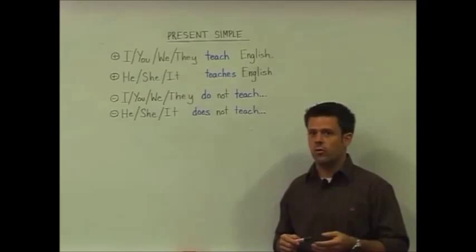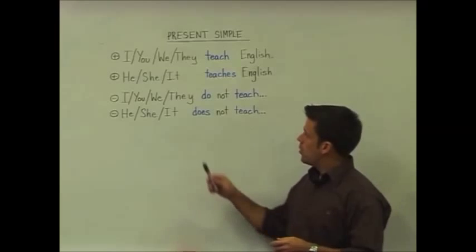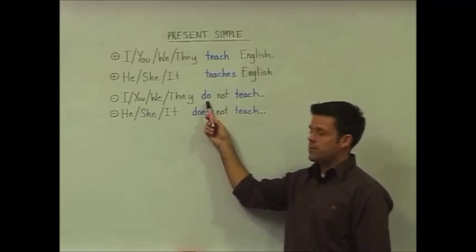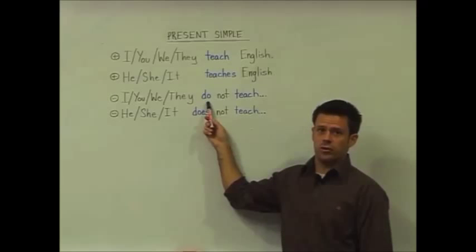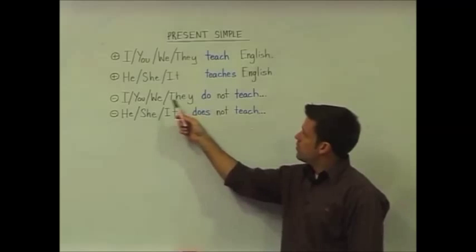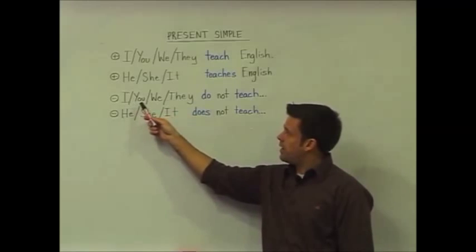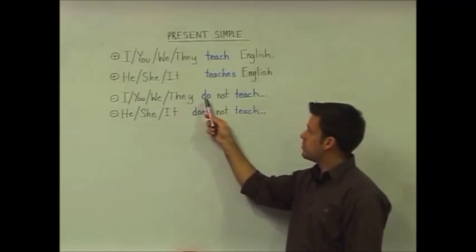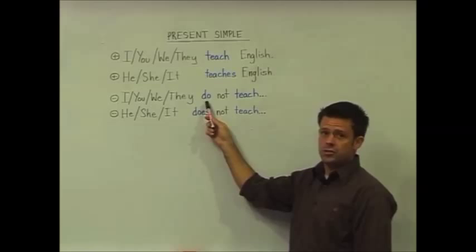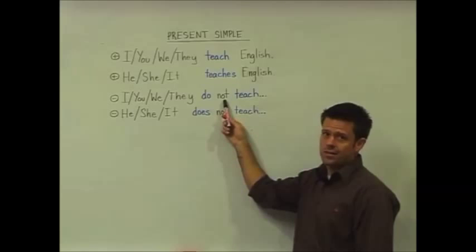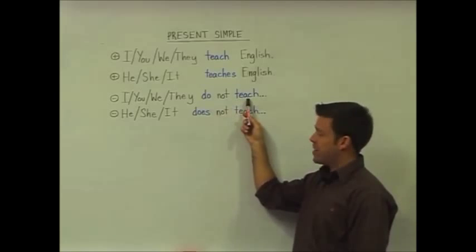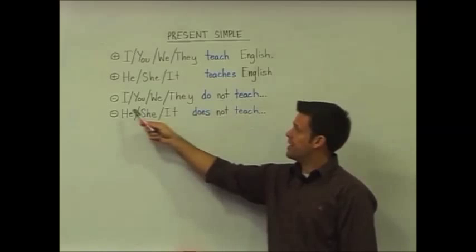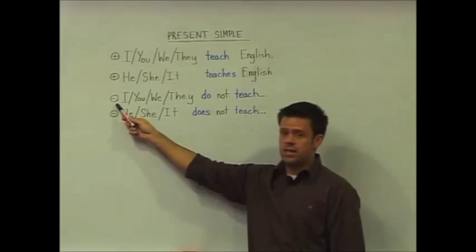For statements in the negative form, what we have to do is add the auxiliary verb 'do.' For subjects I, you, we, and they, we simply leave 'do' as 'do,' use the word 'not,' and keep the base form of the verb for the negative statements.